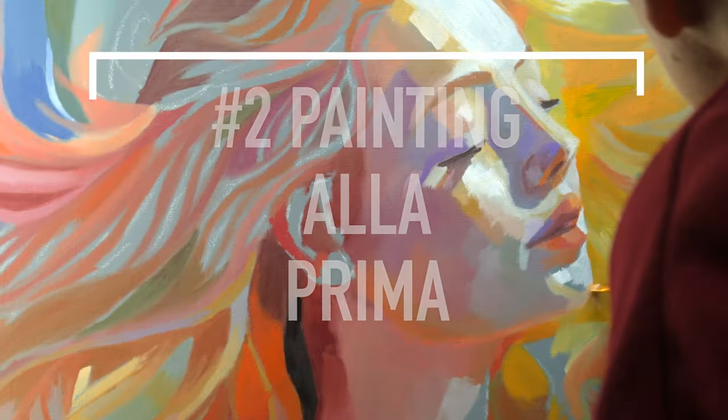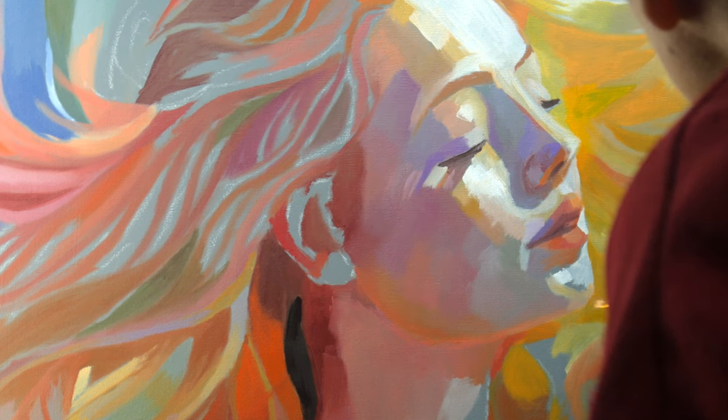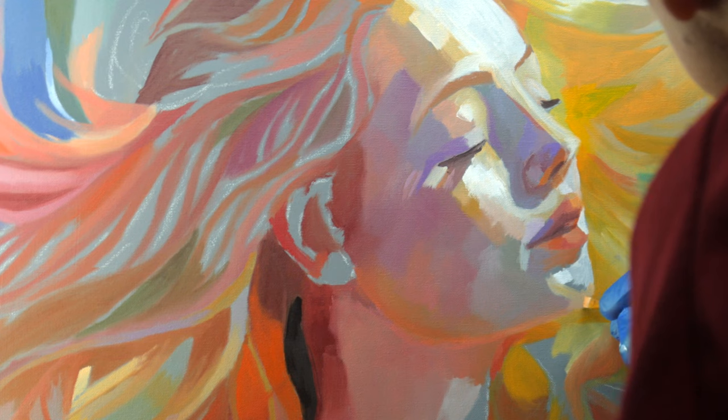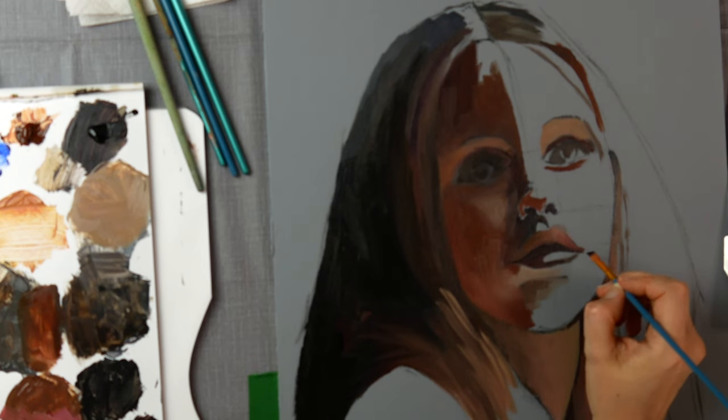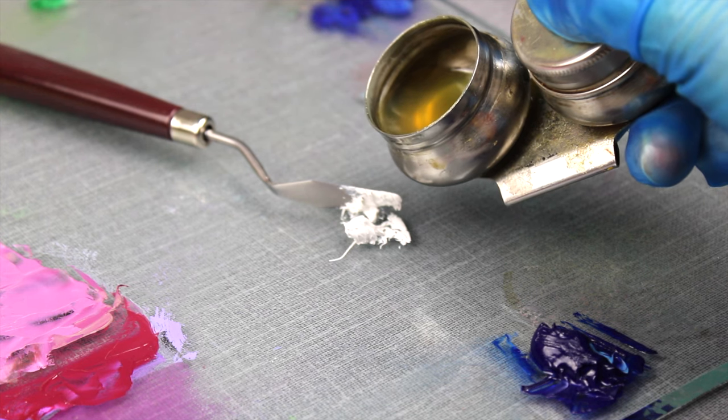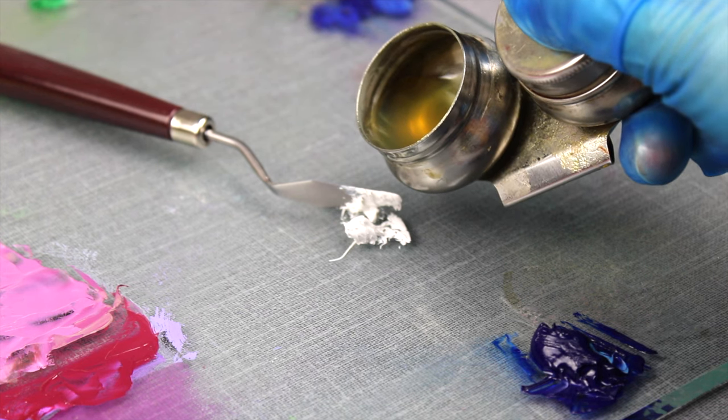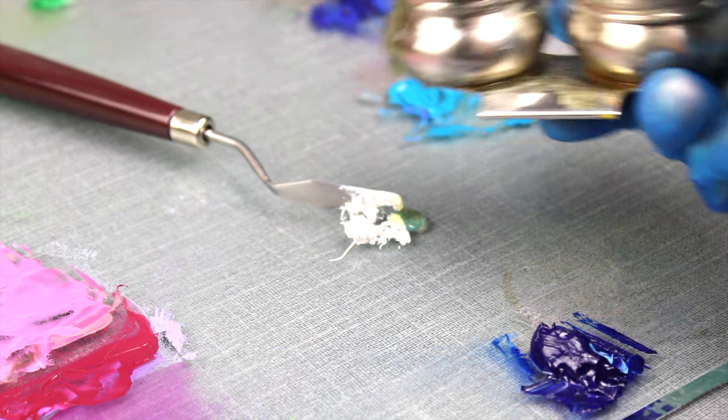Because of how oil paint cures, you need to apply paint in layers that don't interfere with curing. You can paint alla prima, an Italian term meaning the painting is produced in one sitting. If you paint using a direct method or alla prima, solvents and mediums aren't really required, though they can sometimes help.